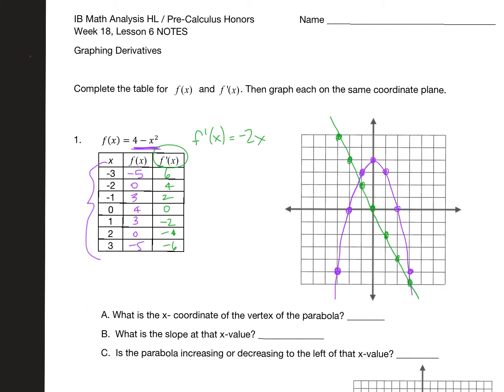But even more important than that, I want you to see a connection. Going back to purple: here on the parabola, all these slopes — if I drew a tangent line anywhere on this side — the slopes would be positive. If I drew that tangent line: positive slope. That tangent line: positive slope. That tangent line: positive slope. All of those have a positive slope.